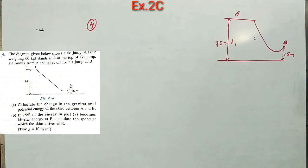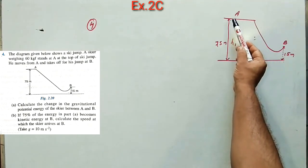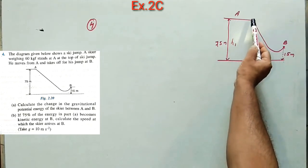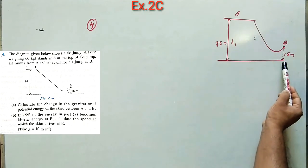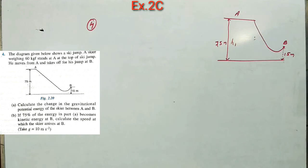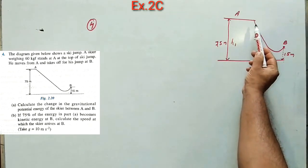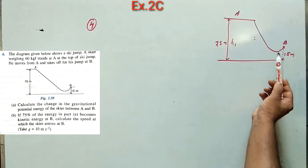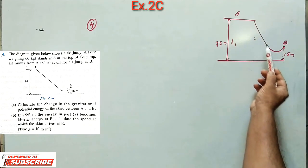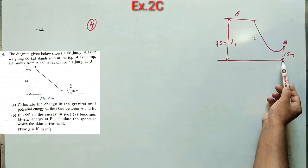We start with Question Number 4. The diagram given below shows a sky jump. A skier weighing 60 kilogram-force stands at point A at the top of the sky jump. He moves from A to B, which is at a height of 15 meters from the ground level. The first part asks us to calculate the change in gravitational potential energy of the skier between A and B. When the skier jumps from A to B, there will be a decrease in gravitational potential energy because the height with respect to the ground keeps decreasing.